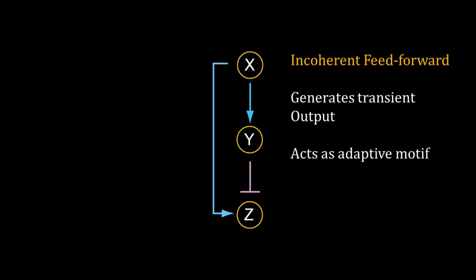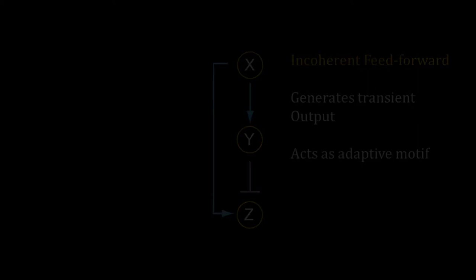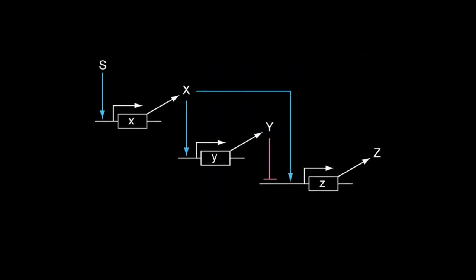But first, the generation of a transient output. Here is an incoherent feed-forward with three genes. S is the input signal and Z is the output. I will use a Hill function for the induction of X by S.